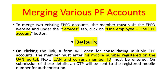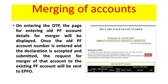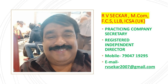Merging accounts: To merge two existing EPFO accounts, the member must visit the EPFO website. Under the services tab, click the 'One Employee, One EPFO Account' button. A form will open for consolidating multiple EPFO accounts. The member must enter his mobile number registered on the UAN portal, along with the UAN and current member ID. On submission of these details, an OTP will be sent to the registered mobile number for authentication. On entering the OTP, the page for entering the old PF account details for merger will be displayed. Once the old PF account number is entered, the declaration is accepted and submitted, and the request for merger will be sent to EPFO.